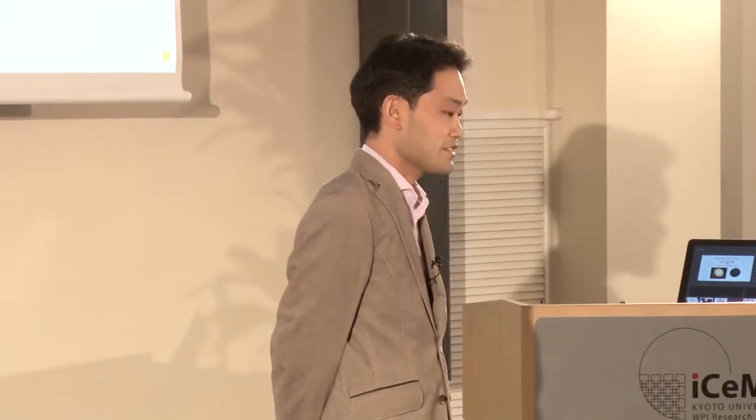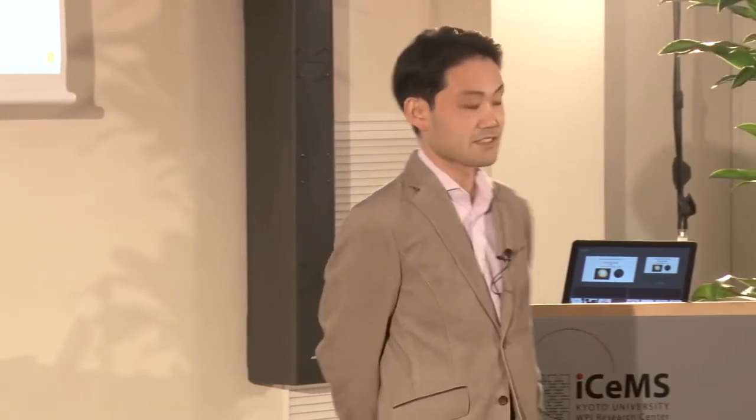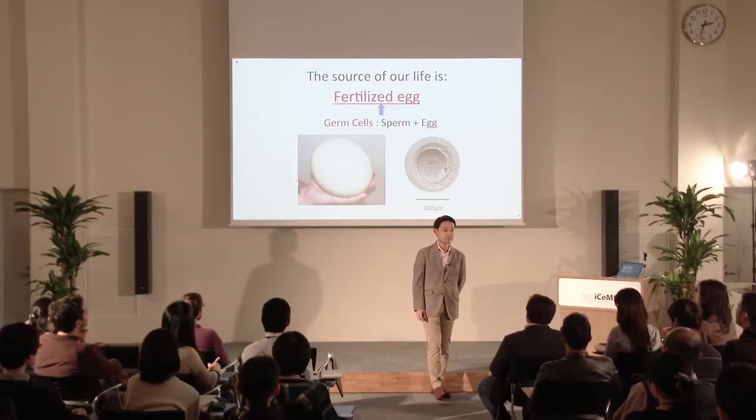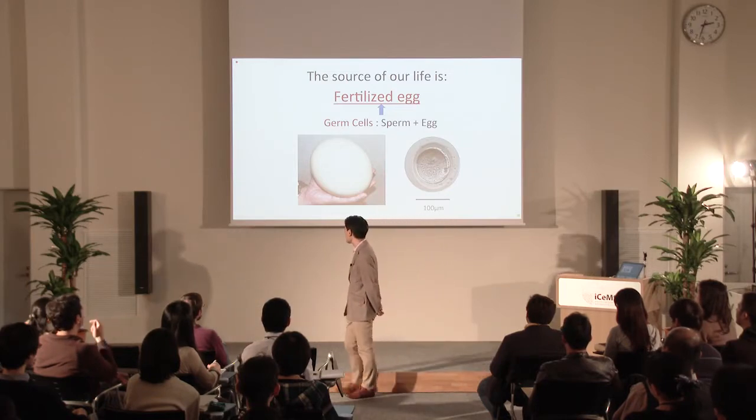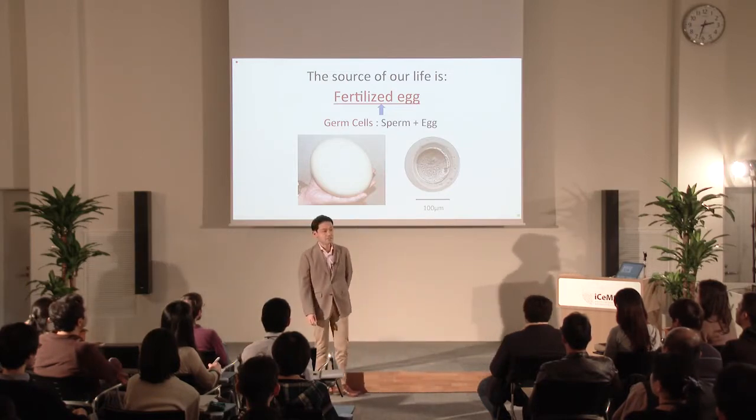As you know, the largest egg existing in this world is the ostrich egg, which is sometimes 15 cm in diameter and weighs over 1 kg. But actually, the cell body itself is quite tiny — as small as the human egg on the right-hand side, which is about 100 µm in diameter. Starting from this cell, the baby grows inside the mother's uterus until they are ready to come outside.